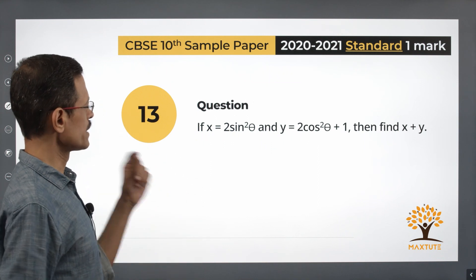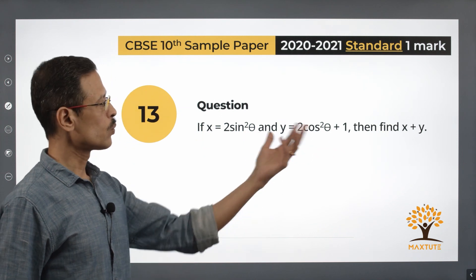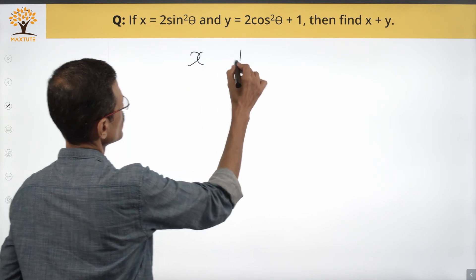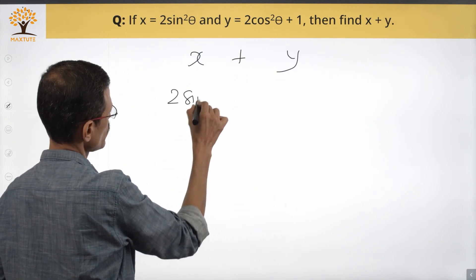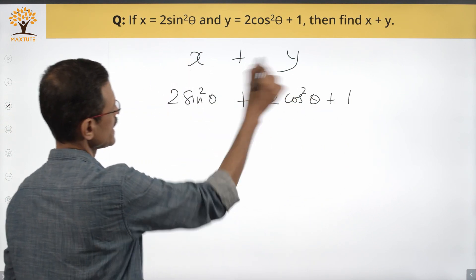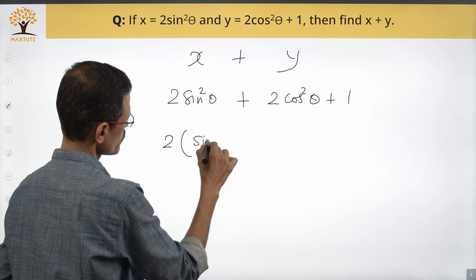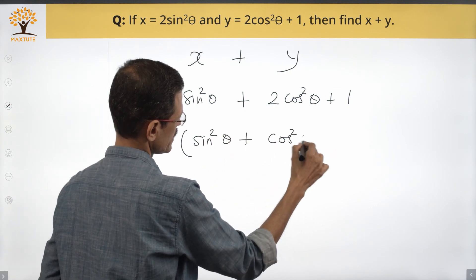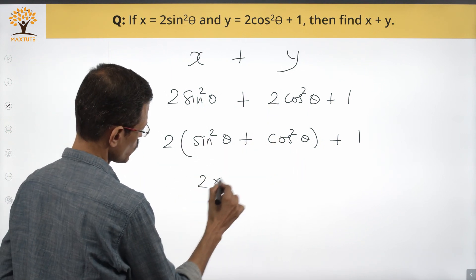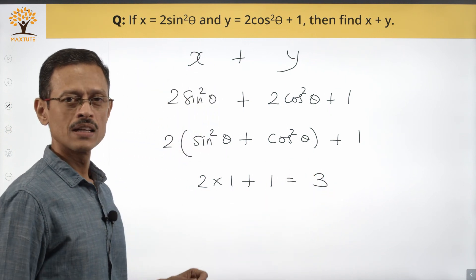Question 13 is from trigonometry. If x equals 2 sine squared theta and y equals 2 cosine squared theta plus 1, what is x plus y? Adding x and y, take 2 as a common factor, leaving sine squared theta plus cosine squared theta plus 1. Since sine squared theta plus cosine squared theta equals 1, we get 2 times 1 plus 1, which equals 3.